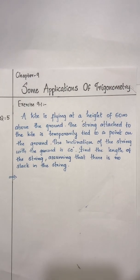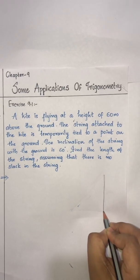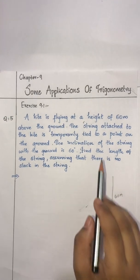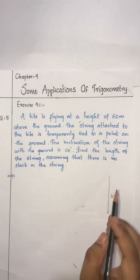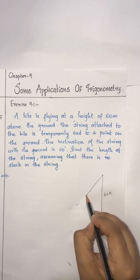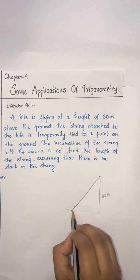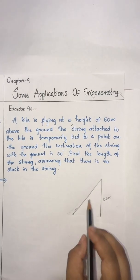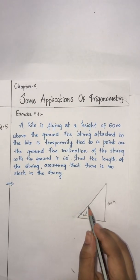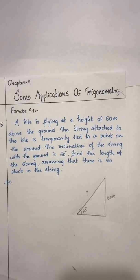A kite is flying at a height of 60 meters above the ground. The string attached to the kite is temporarily tied to a point on the ground. The inclination of the string with the ground is 60 degrees. We need to find the length of the string, assuming that there is no slack in the string.